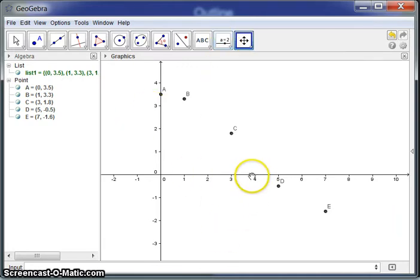We can also, if we want, readjust the viewing window, like we did before. And we see, and we might say, okay, yeah, that looks like a fairly nice picture. And now we just do the fitline command, again, that we used before.